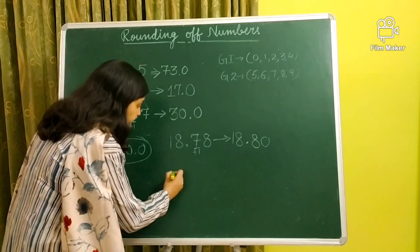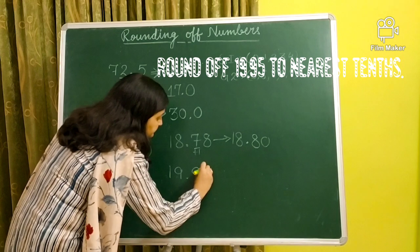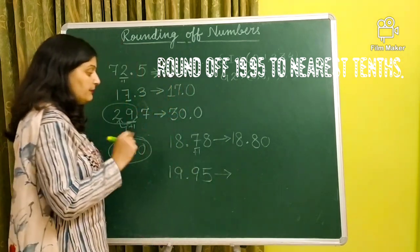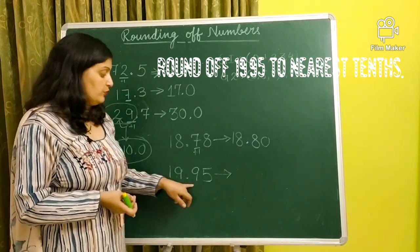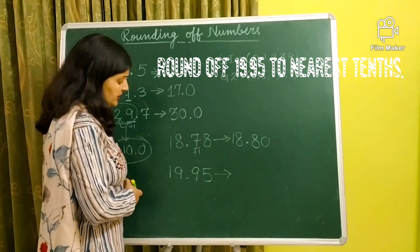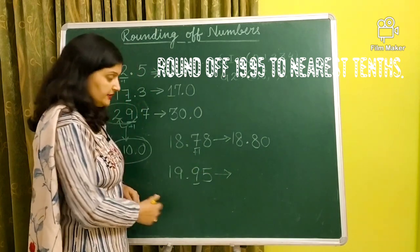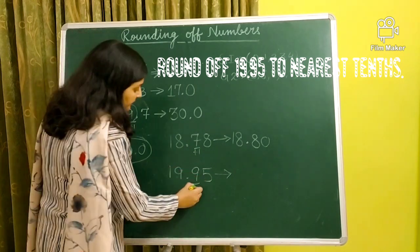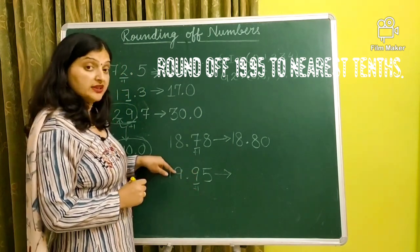Let us take one more example. I'll take this example in a similar way. 19.95. Okay. Now, let us round this number. What is the question? Round 19.95 to nearest tenth. Nearest tenth. It means, which will you underline? Tenth place. Compare with five. So as soon as we compared five, it means we have to add one. Now, whenever we have to add one to nine, we will shift the carry to the next place.